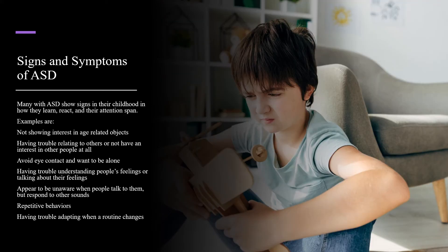Many with Autism Spectrum Disorder show signs in their childhood in how they learn, react, and their attention span. Examples include not showing interest in age-related objects, having trouble relating to others, or not having interest in other people at all, avoiding eye contact and wanting to be alone, having trouble understanding people's feelings or talking about their own feelings, appearing to be unaware when people talk to them but responding to other sounds, repetitive behaviors, and having trouble adapting when a routine changes.